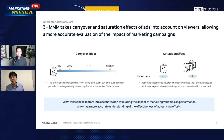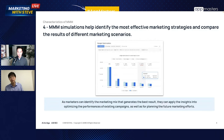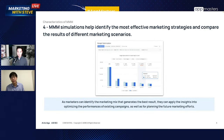The last benefit is about prediction. Many measurement solutions focus on retrospective insights rather than what will happen in the future. Because MMM is based on machine learning and statistical methodology, it can run simulations and tell you what to do next. You can't rely on this 100%, but it certainly acts as a good advisor for double-checking your next steps.